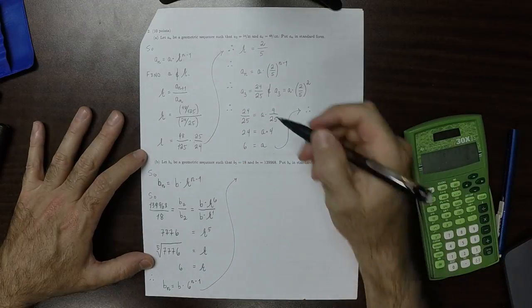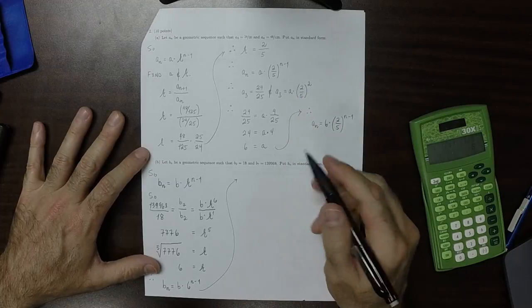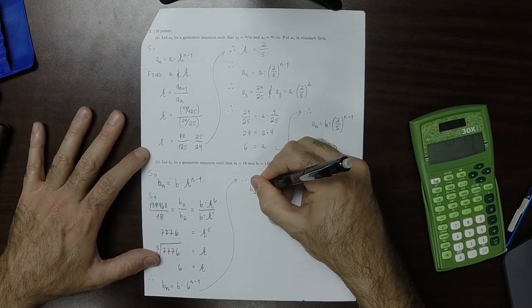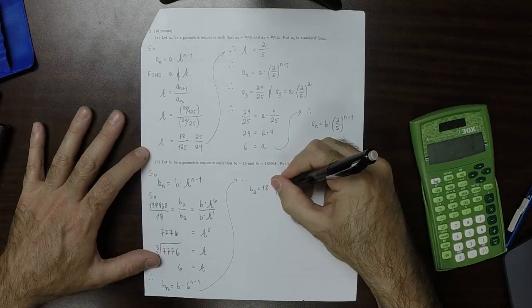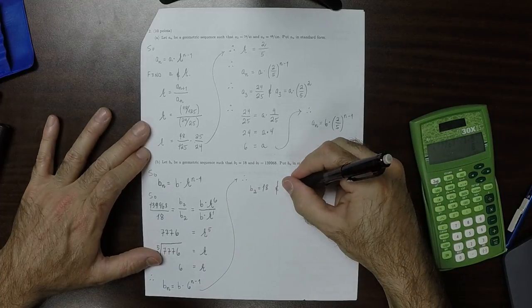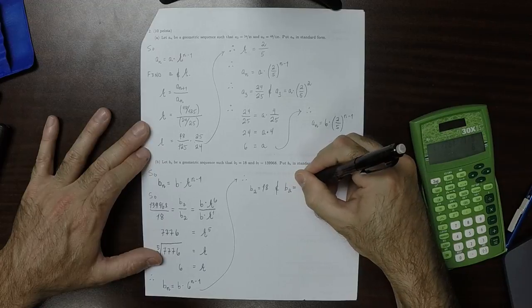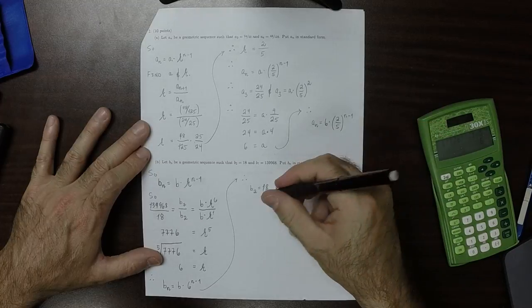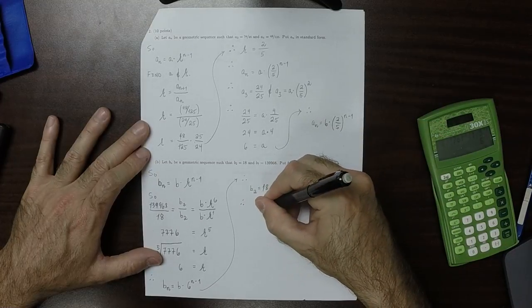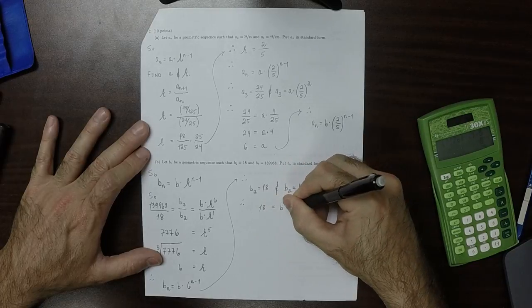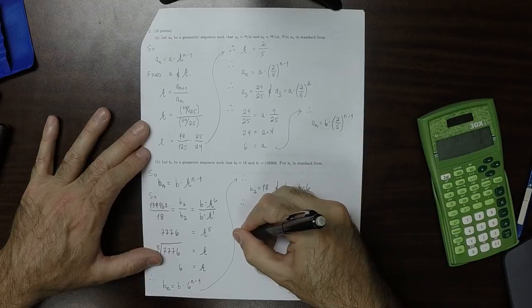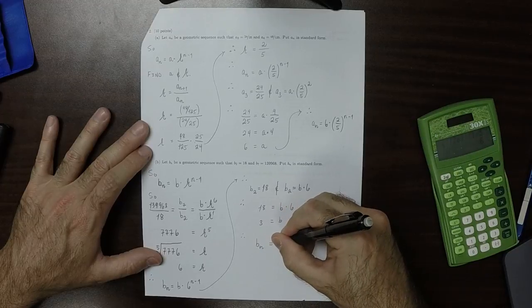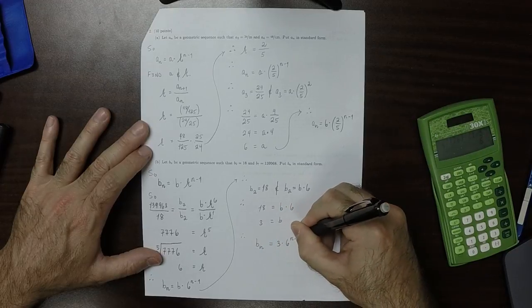Now we can use either piece of data. For example, we know from the data that b₂ is 18. From the fact that it's a geometric sequence, we know that b₂ is the unknown b multiplied by 6. Therefore, we know that 18 is the unknown b multiplied by 6, so b is 3. Therefore, we know that bₙ is 3 multiplied by 6 to the power n minus 1.